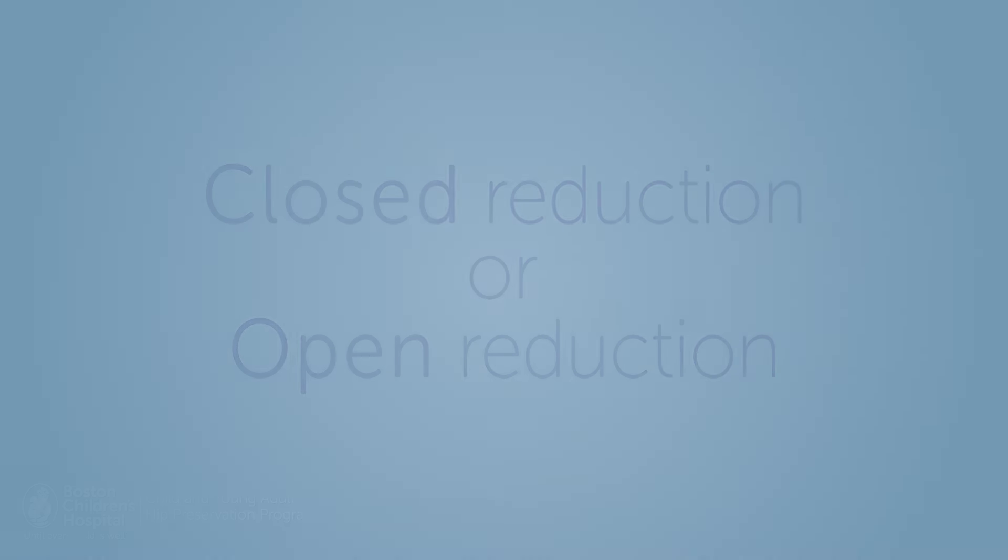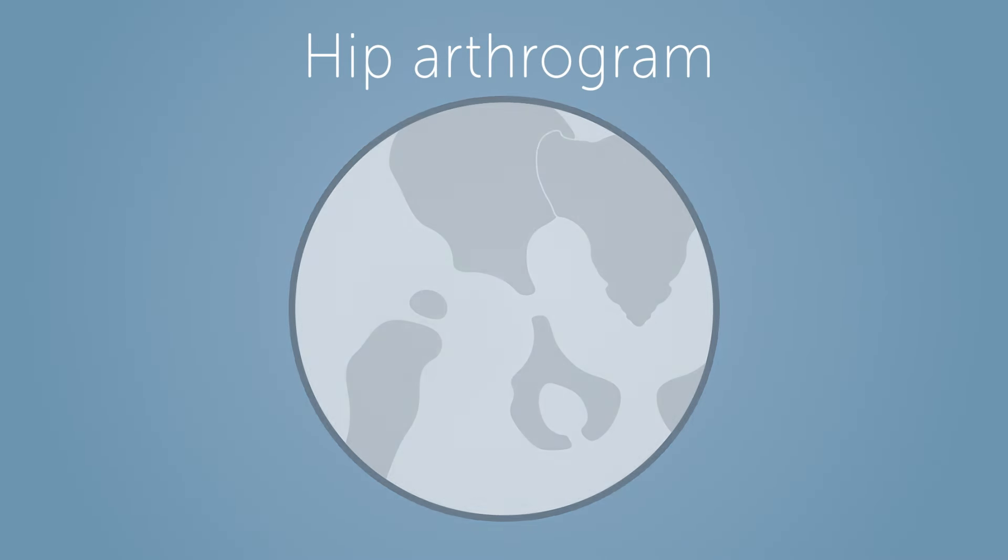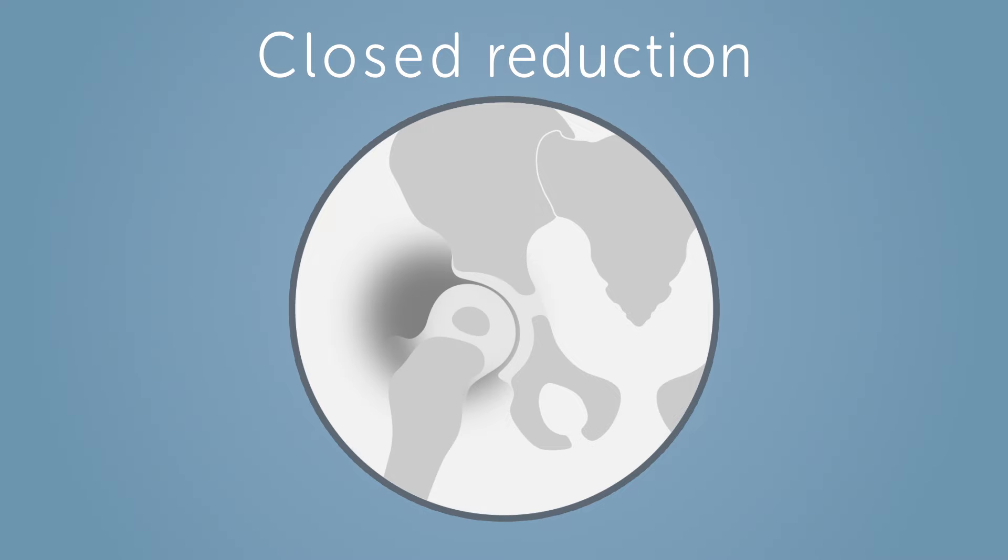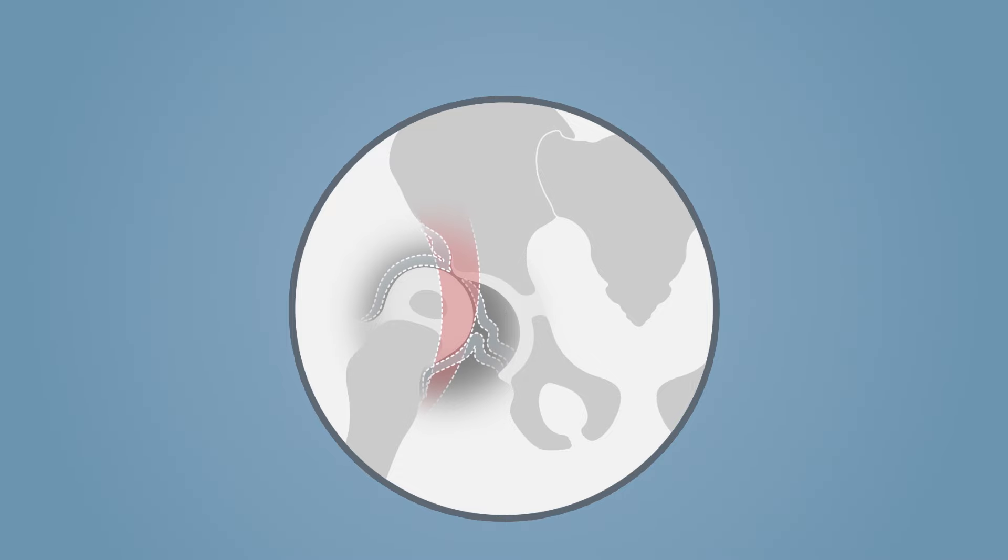To help determine the best treatment, a hip arthrogram is typically performed. During the hip arthrogram, contrast is injected into the hip to better see the joint on an x-ray. If possible, a closed reduction is performed, which means the femur is manually put back in place by your orthopedic surgeon.